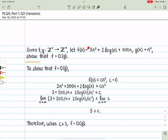I've changed up the f of n here and now it's defined as 3n squared plus 2 log n plus 500n and g of n is n squared. Given f and g are functions mapping from z plus to z plus, show that f is big O of g.